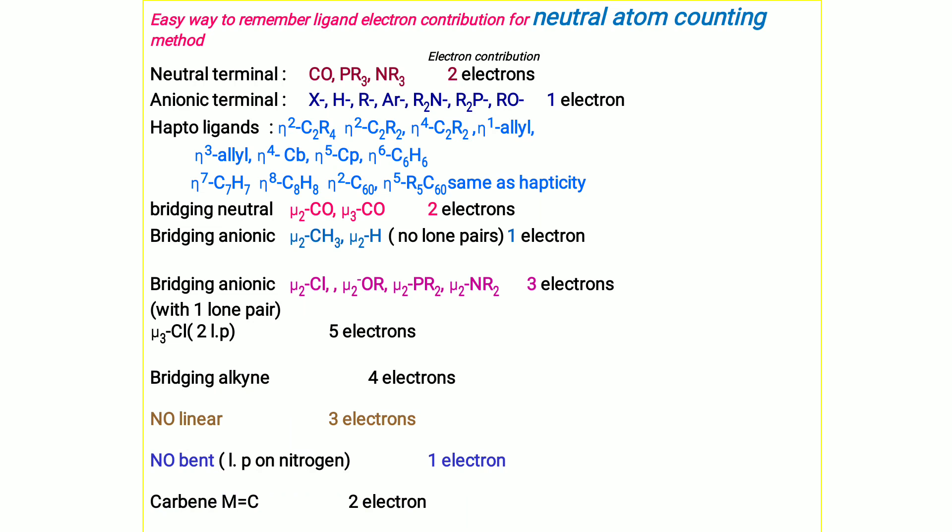Easy way to remember ligand electron contribution for the neutral atom counting method: neutral terminal ligands (CO, phosphine, amine) contribute 2 electrons. Anionic terminal ligands (halide, hydride, alkyl, aryl, nitro, phosphide) contribute 1 electron. Hapto ligands contribute the same as their hapticity. Bridging neutral ligands (μ₂-CO, μ₃-CO) contribute 2 electrons. Bridging anionic with no lone pair (μ₂-CH₃, μ₂-H) contribute 1 electron. Bridging anionic with one lone pair (μ₂-Cl, μ₂-OR, μ₂-PR₂, μ₂-NR₂) contribute 3 electrons. Bridging Cl contributes 5 electrons. Bridging alkyne contributes 4 electrons.